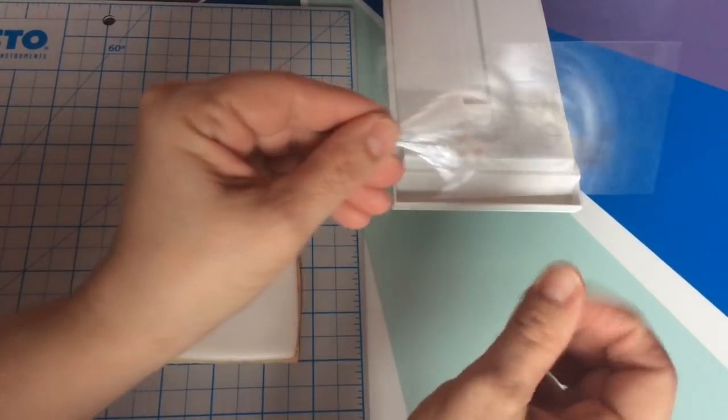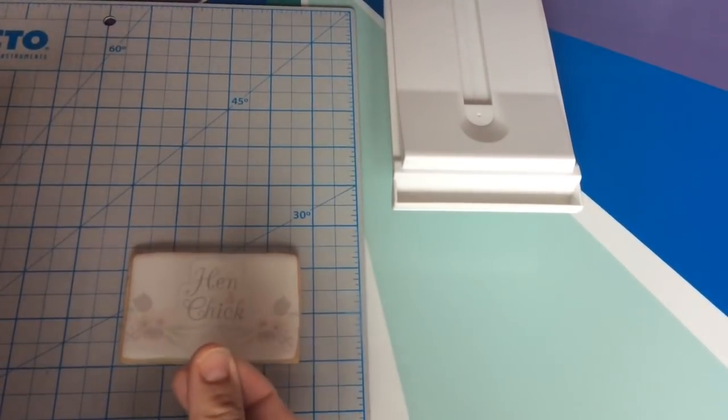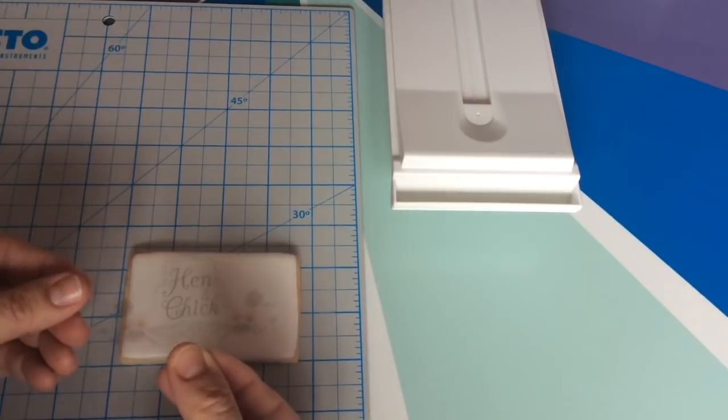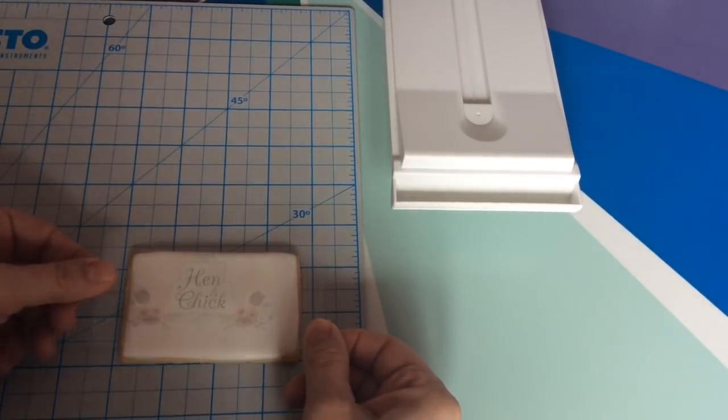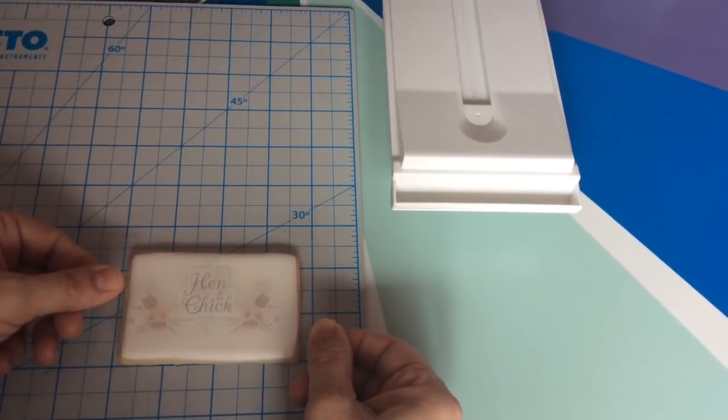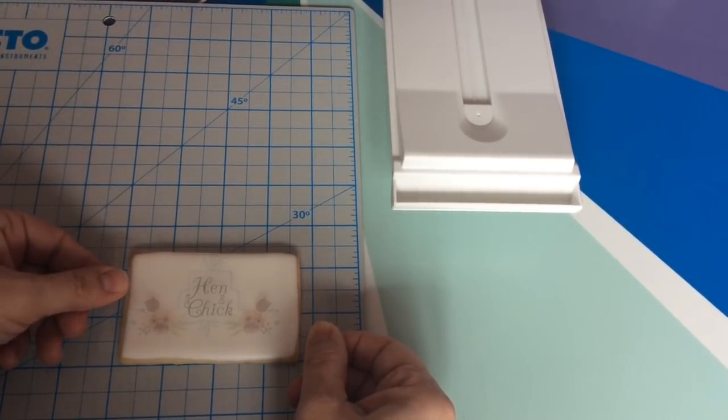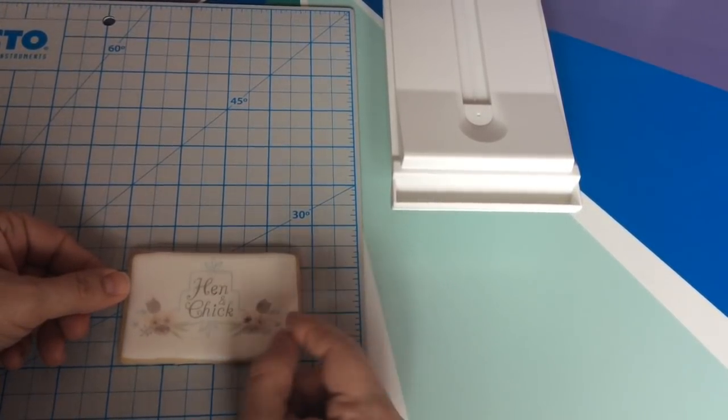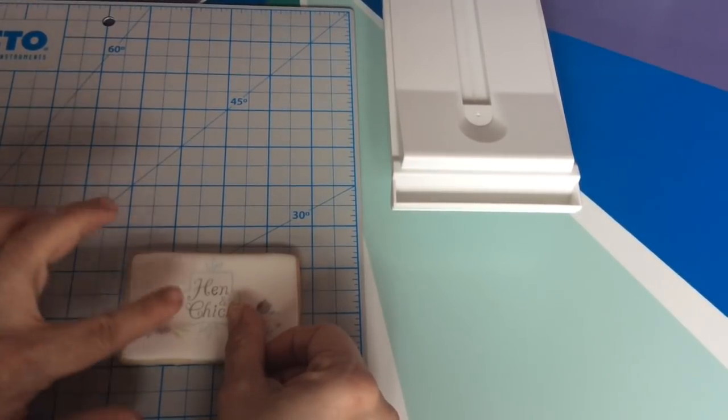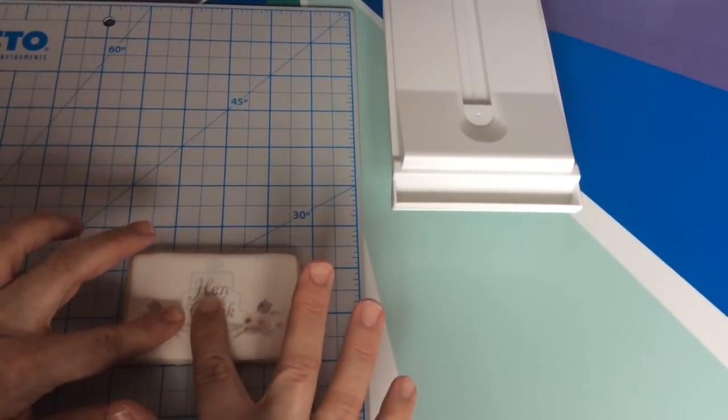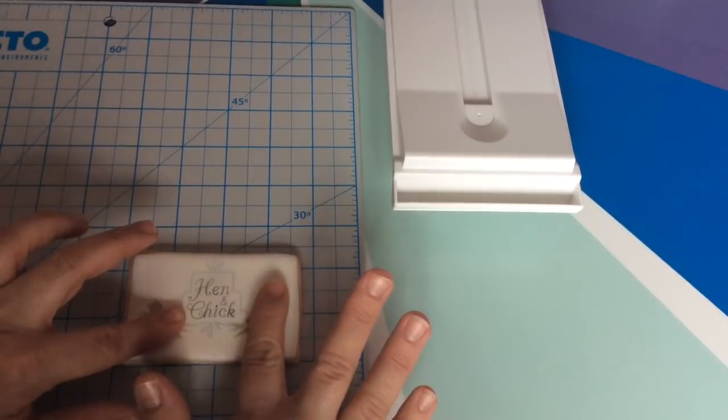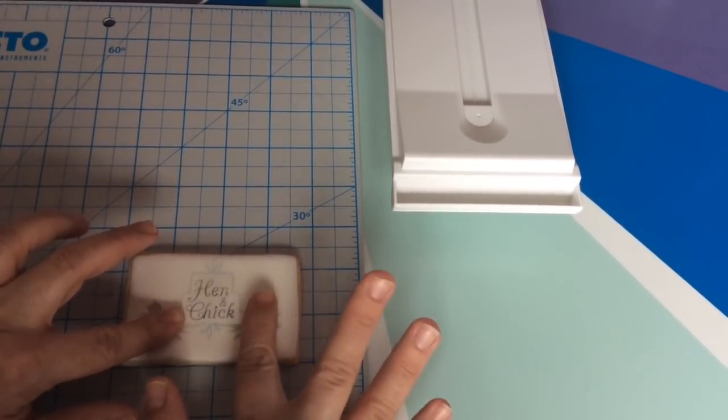Once the image is touching your cookie, you don't want the acetate to move. Use one finger to hold it down firmly and use your other hand to transfer the image by pushing straight down onto every part of the image until it all transfers onto your cookie. Unlike fondant, royal icing isn't going to grip the acetate at all, so it will slip very easily and the image will smear if you're not careful.